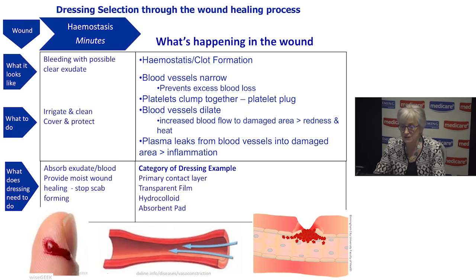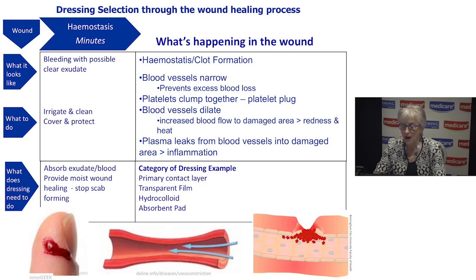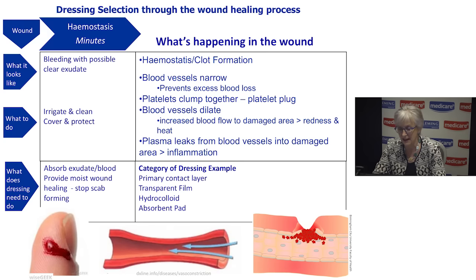At that time in the wound, it is bleeding and may have some clear exudate — the term we use for the fluid that comes out of a wound. What we need to do is irrigate the wound with saline or even tap water, clean it, then cover and protect it. We want the dressing at this point to absorb any exudate and blood, and to provide moist wound healing — simply stopping a scab from forming. We will look at why we need to do that in later slides.